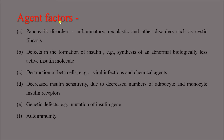Looking at agent factors: pancreatic disorders like inflammatory and neoplastic diseases, and conditions like cystic fibrosis can lead to diabetes. Defects in insulin formation — for example, synthesis of an abnormal, biologically less active insulin molecule — can also occur. Other agent factors include destruction of beta cells due to viral infections or chemical agents, decreased insulin sensitivity due to decreased number of adipocyte and monocyte insulin receptors, and genetic defects like mutation of the insulin gene or autoimmunity.